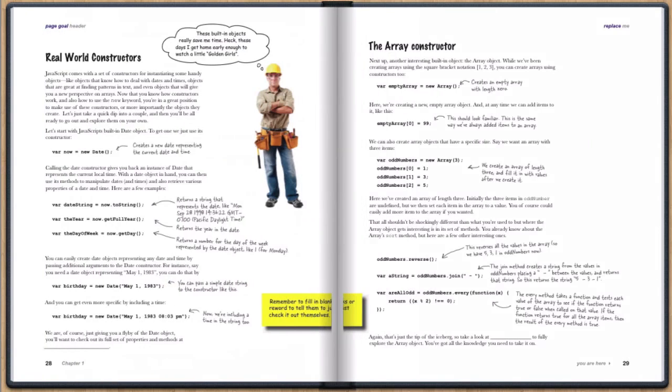Finally, we take a look at a couple of constructors that come built into JavaScript, the array constructor and the date constructor. The array constructor is used to make arrays and the date constructor to make dates.